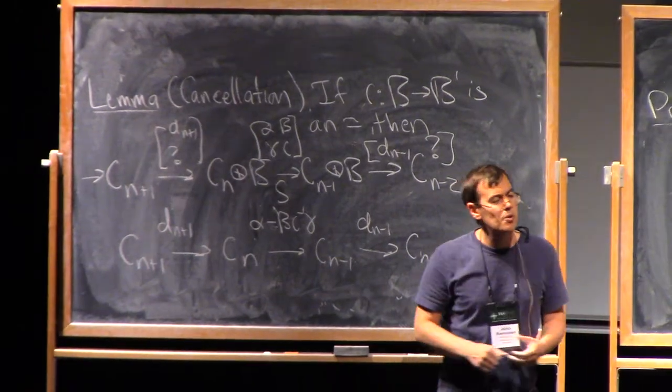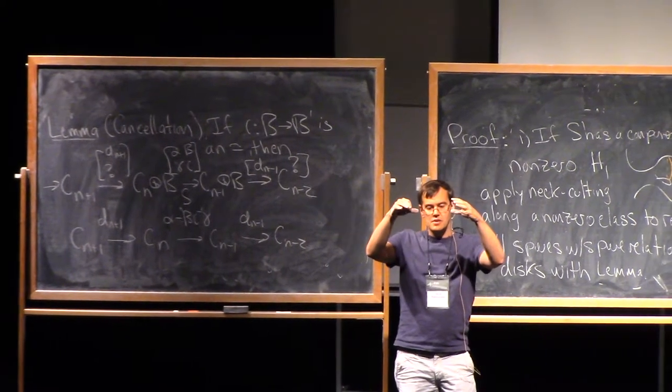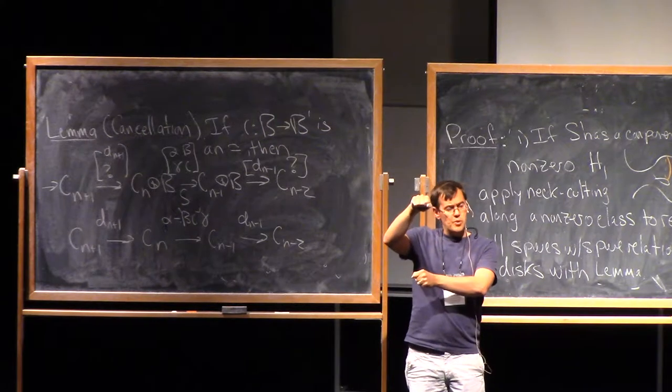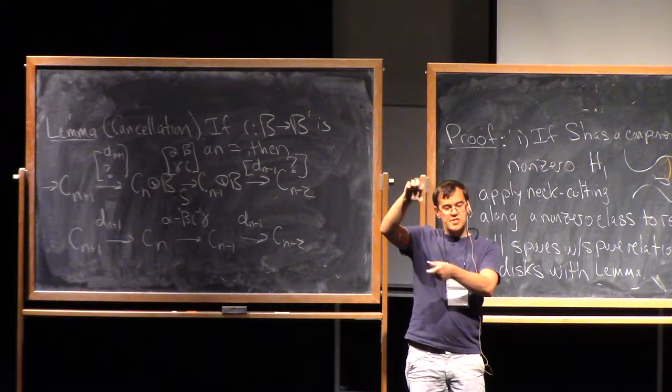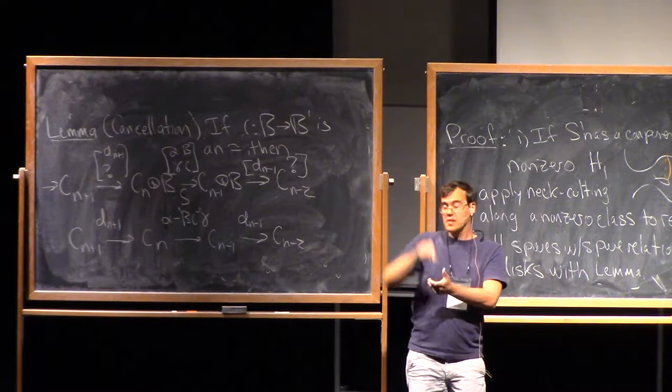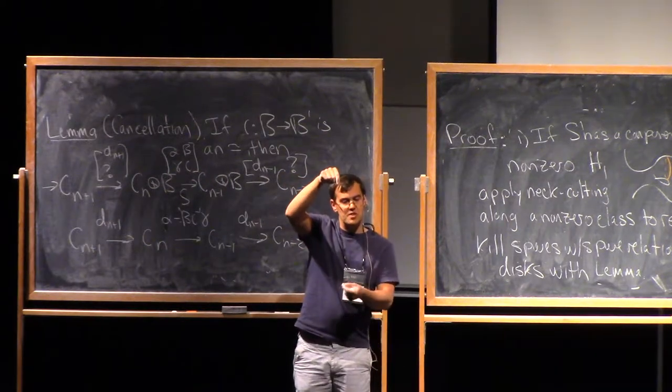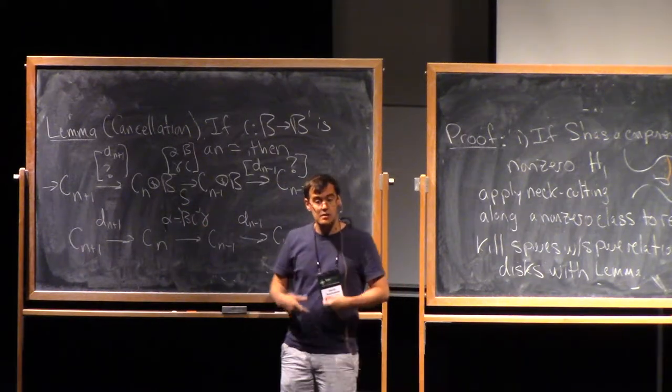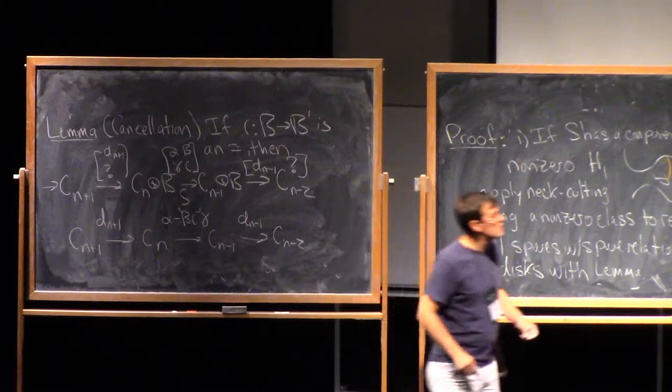Why do I call this cancellation? Well, for example, a common situation which this might apply is if you have a Morse complex. So maybe you know that if I have a Morse complex, and I've got two critical points and a unique flow between them, then I can cancel those two critical points to get a Morse complex with two fewer critical points. That's exactly what's going on here. This iota here is the isomorphism between those two points, and this complex here is what you would get in your new Morse complex after you perform that cancellation.